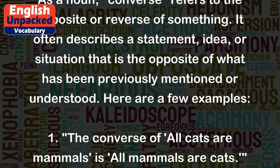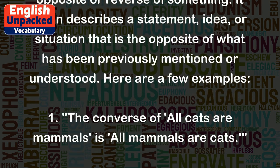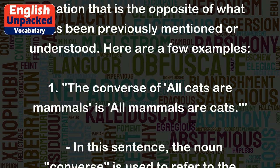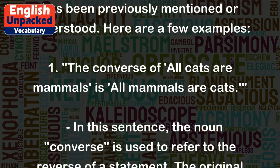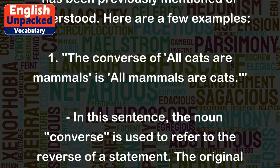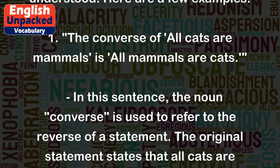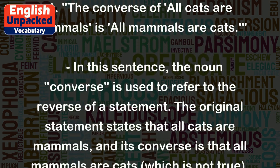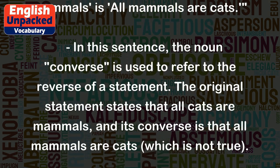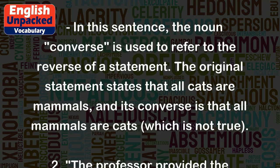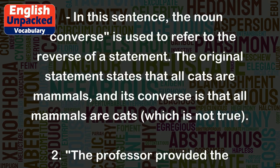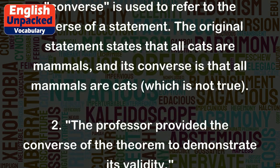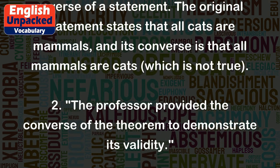Here are a few examples. 1. The converse of 'all cats are mammals' is 'all mammals are cats.' In this sentence, the noun converse is used to refer to the reverse of a statement. The original statement states that all cats are mammals, and its converse is that all mammals are cats, which is not true.